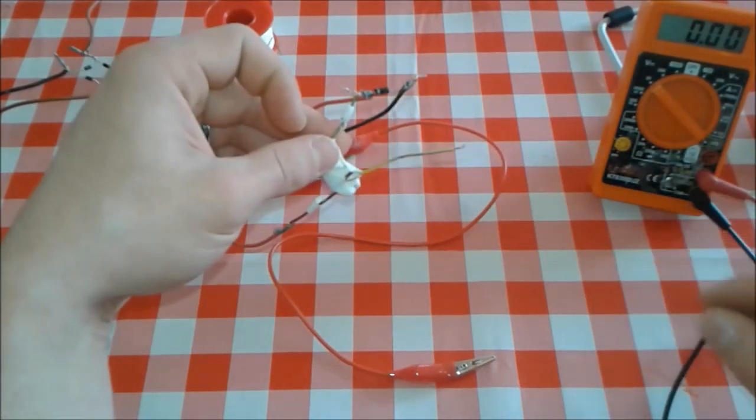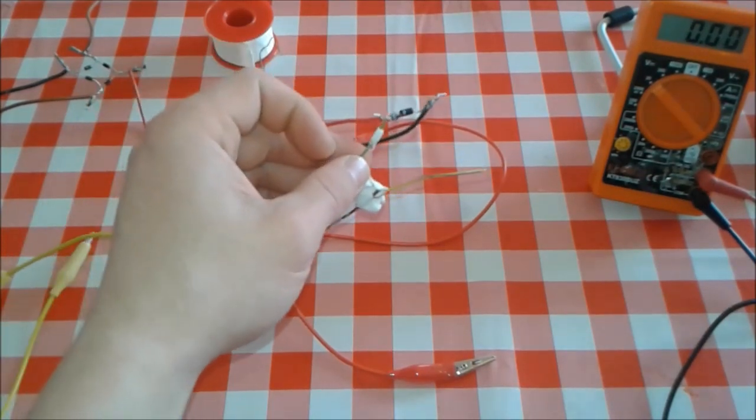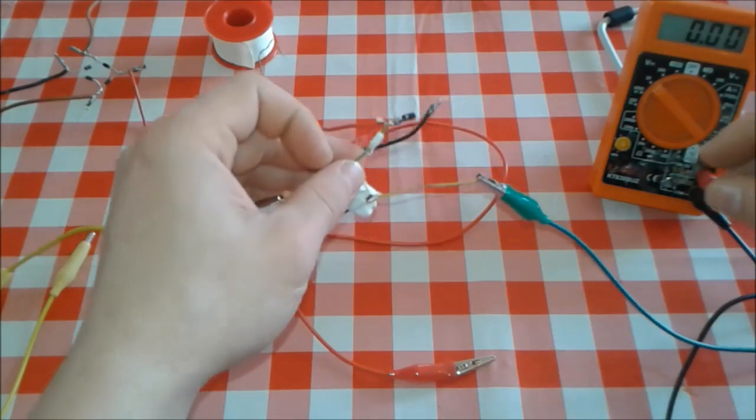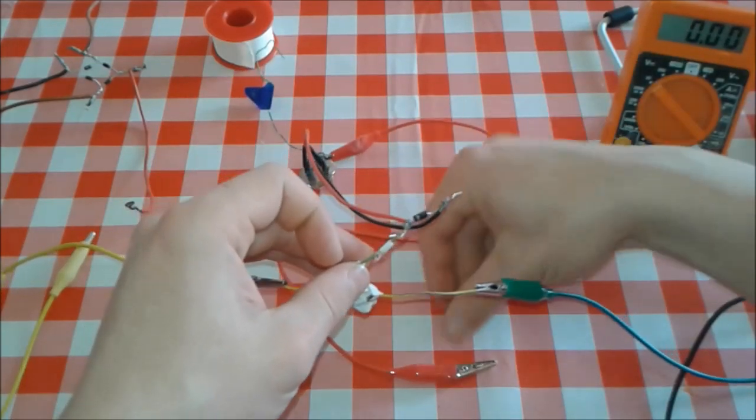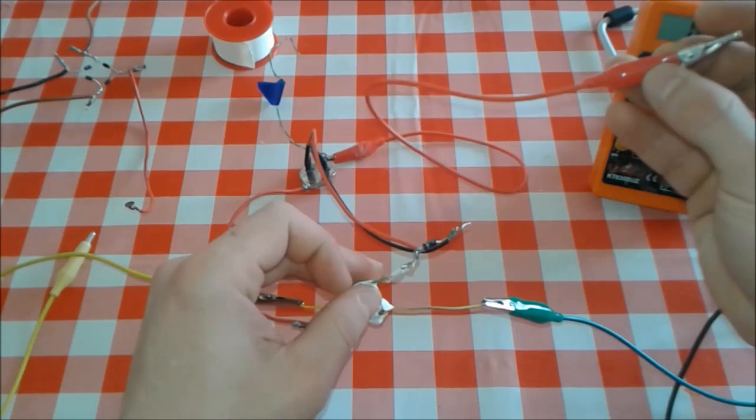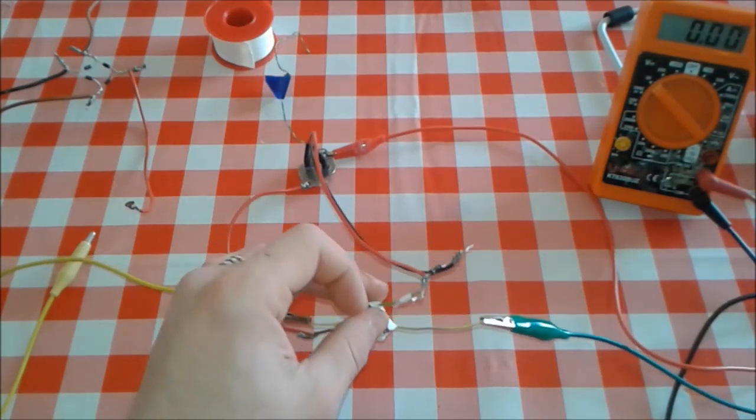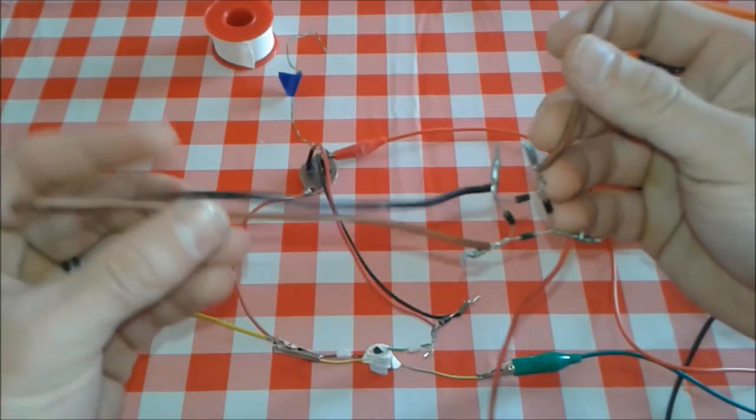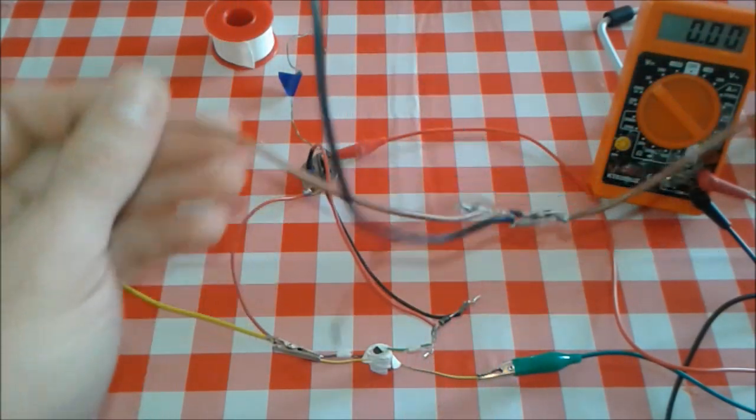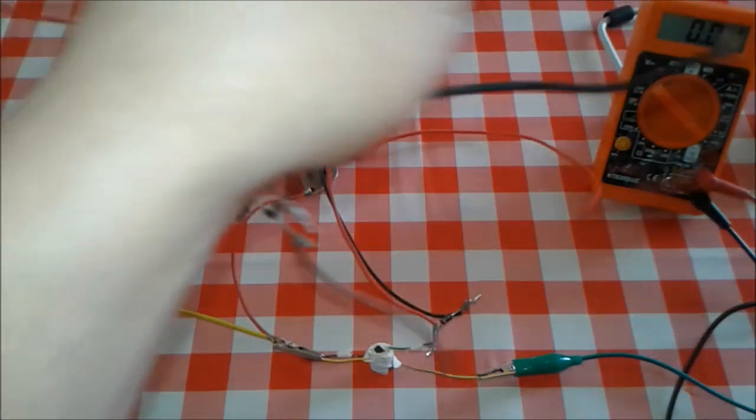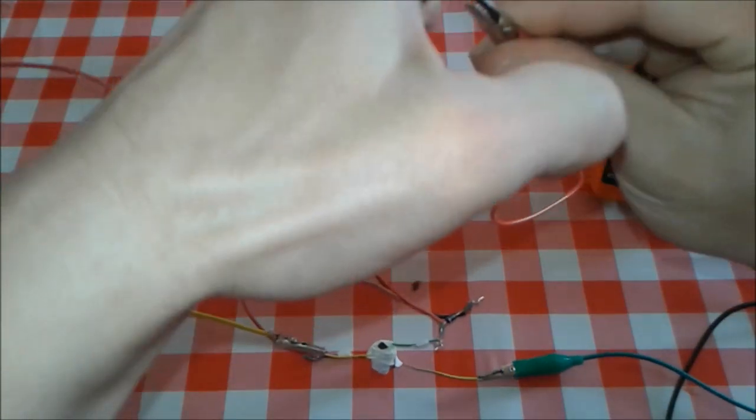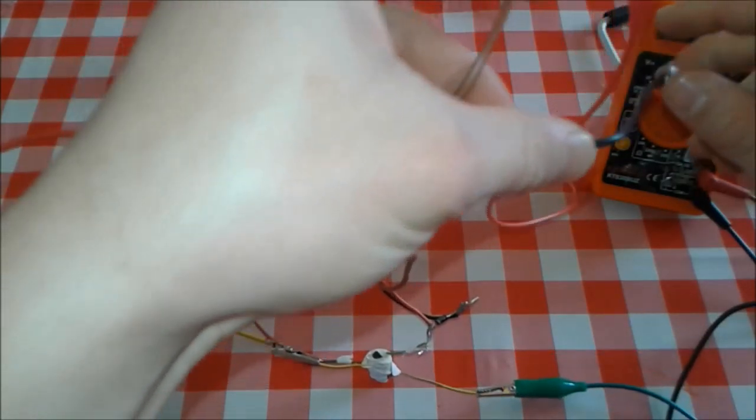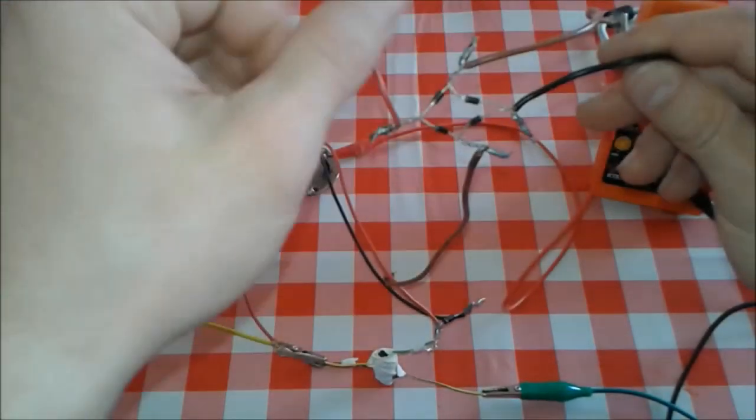The other one is gonna be our output. So we're gonna put an alligator clip like so. And the other connection of the collector is gonna be the output as well. Now both of the outputs, they're gonna connect to the bridge rectifier. So one alligator and the green alligator. We are set now.